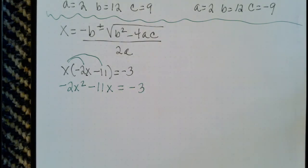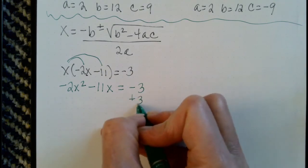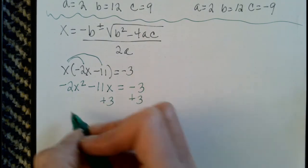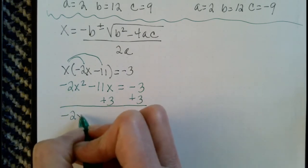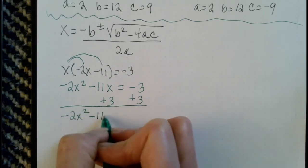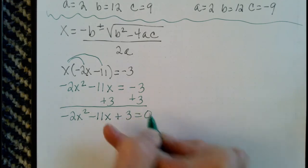But we also need to have the equation set equal to 0. So let's add 3 to both sides. And we get negative 2x squared minus 11x plus 3 equals 0.